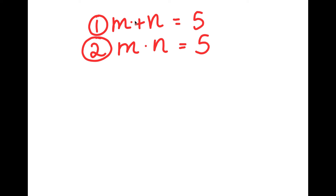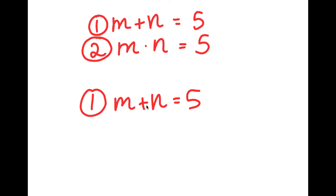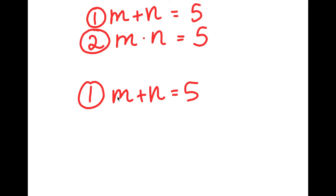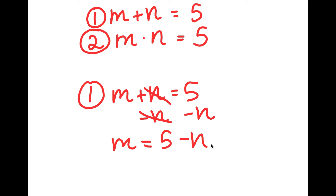My first equation is m plus n equals 5, and what I'm going to do is rewrite this to get the value of just one variable. I can choose any one — for the sake of this video, I'm going to choose m. To get the value of m, I have to get rid of n by subtracting n on both sides. These two cancel out, and I get m is equal to 5 minus n.